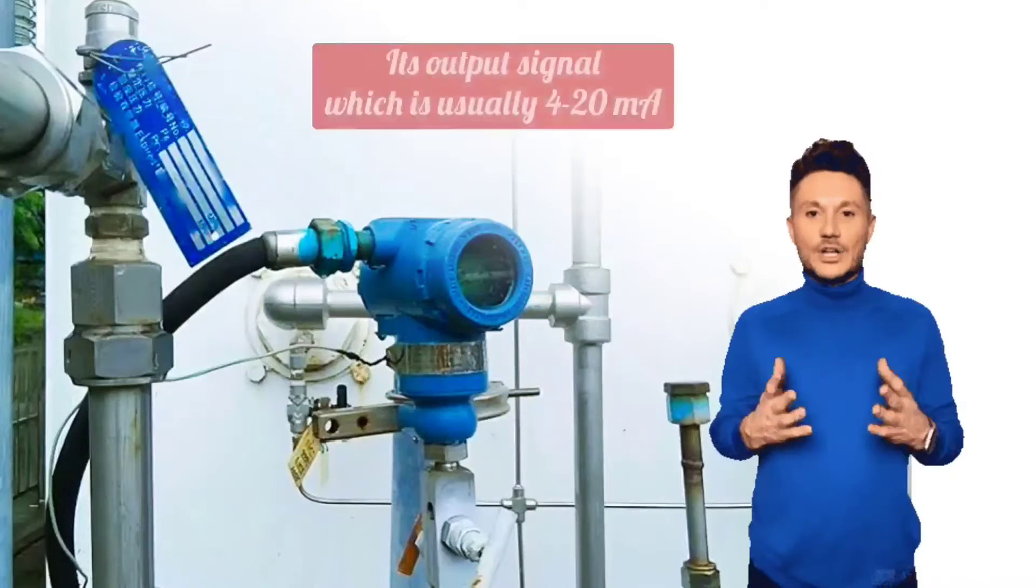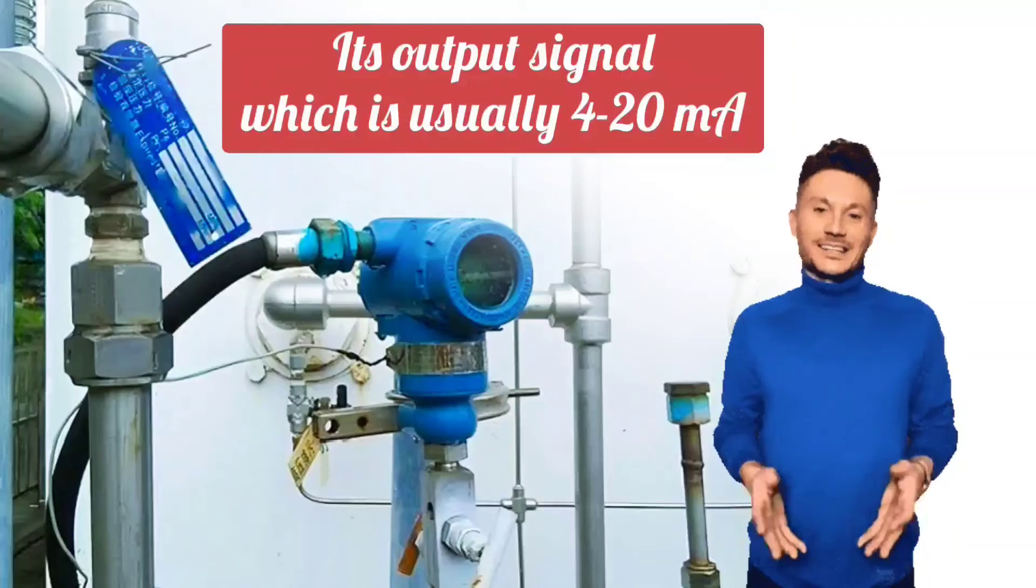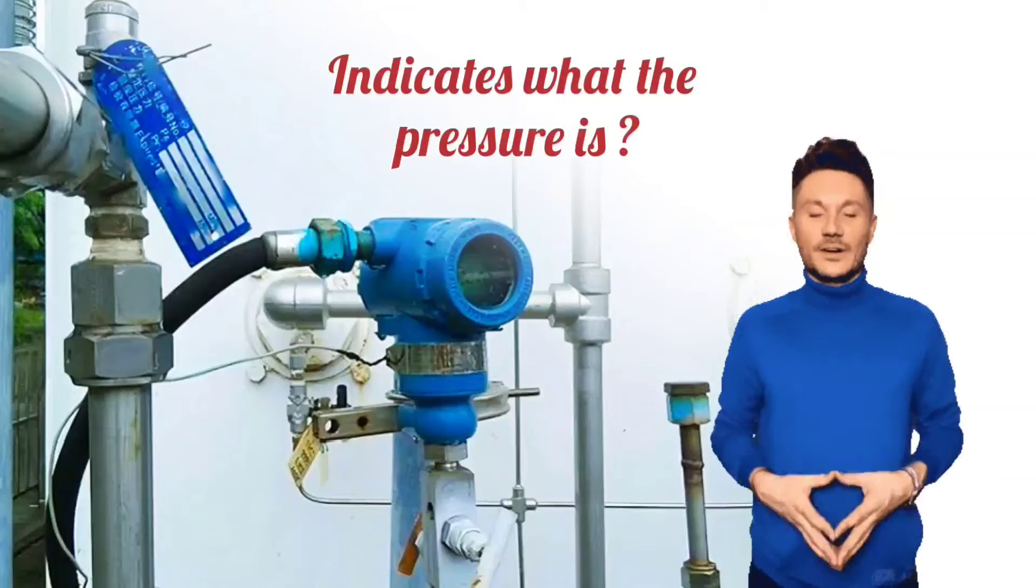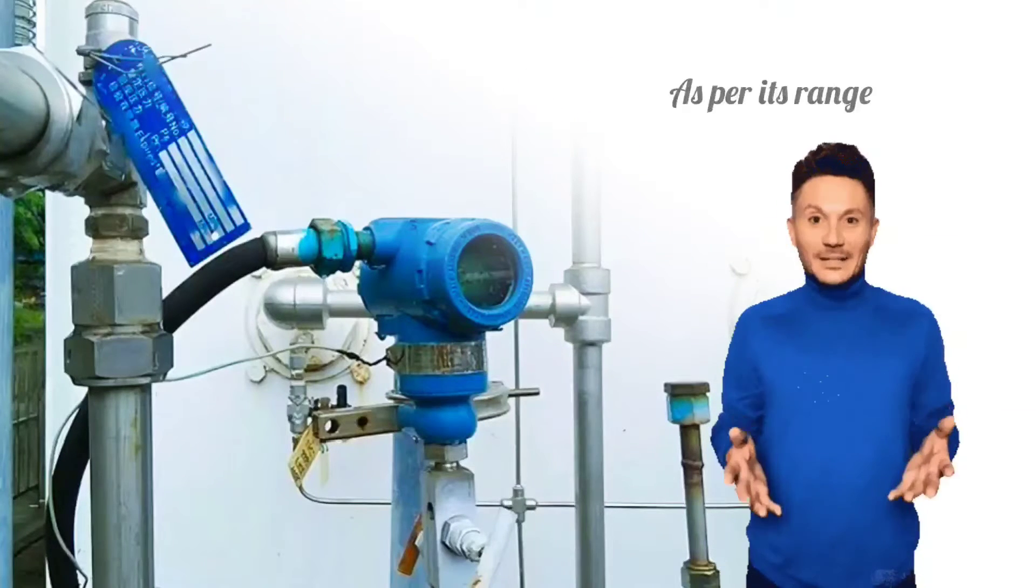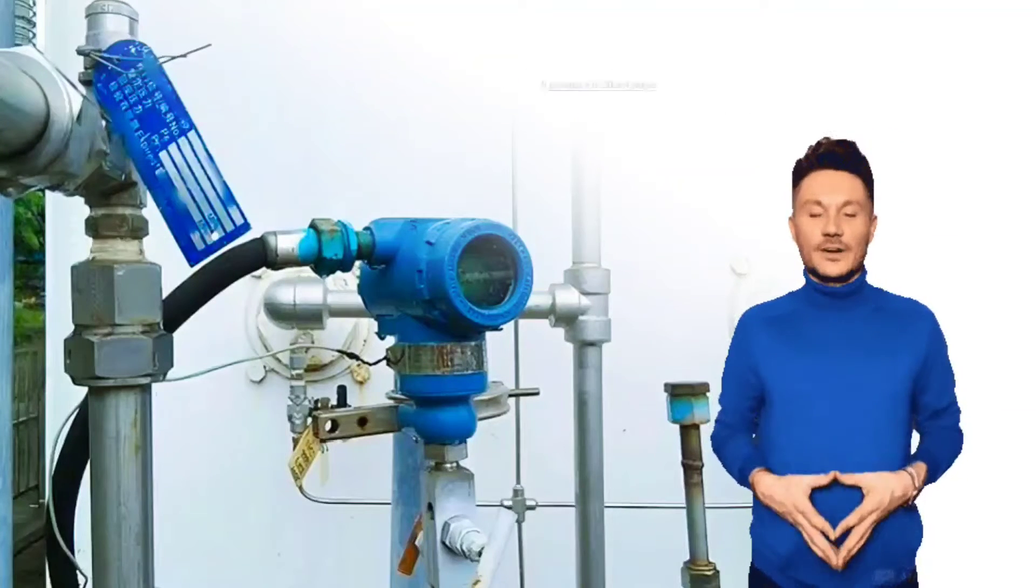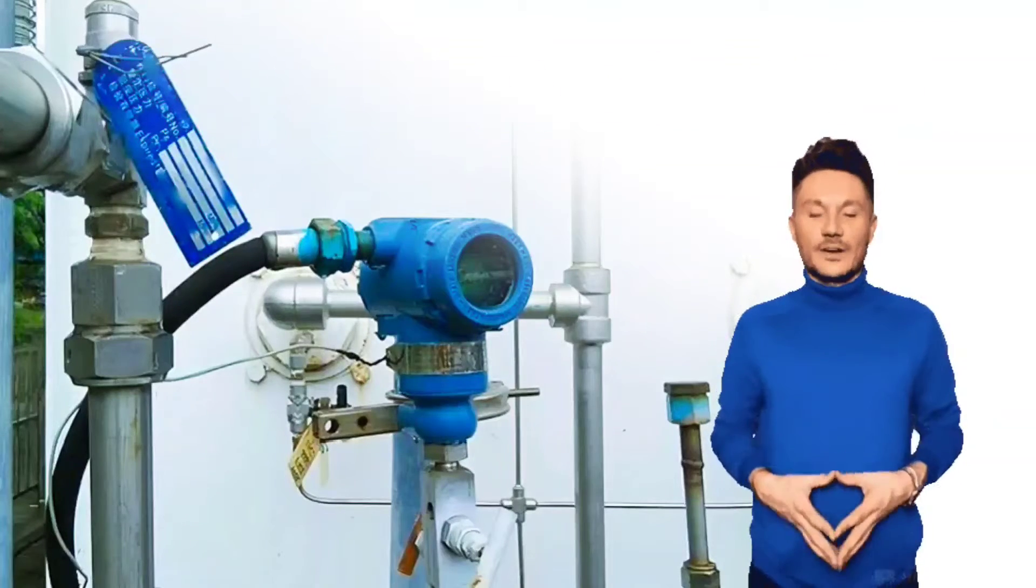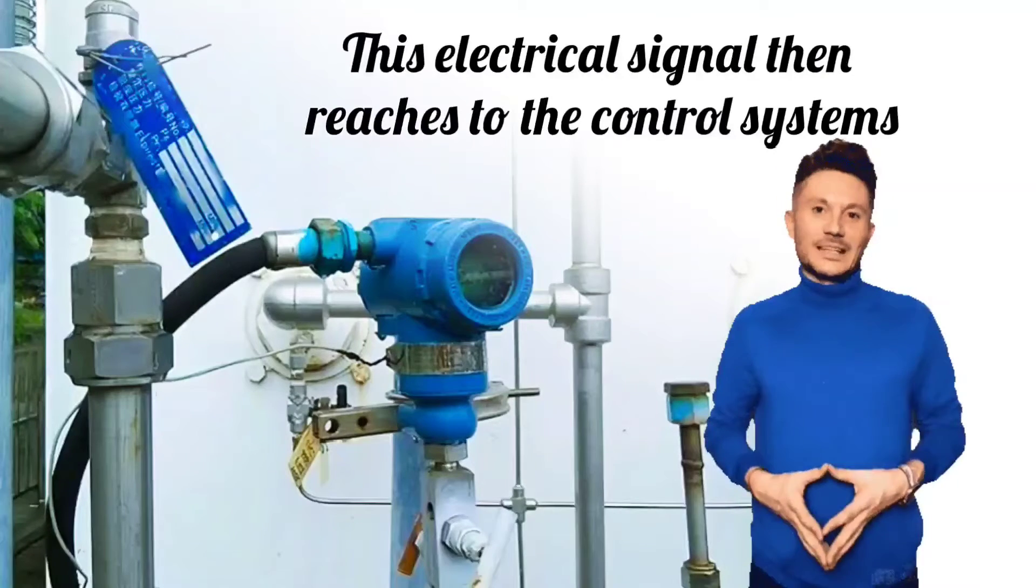Its output signal, which is usually 4 to 20 mA, indicates what the pressure is. As per its range, it provides 4 to 20 mA output signal. This electrical signal then reaches the control systems.